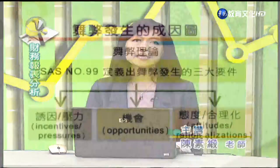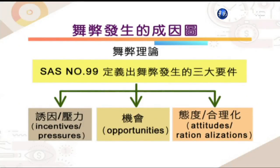根据美国审计准则委员会第99号定义，舞弊发生有三大成因：第一是诱因与压力，第二是机会，第三是态度与行为的合理化。这三个成因有点类似天时地利人和，缺一不可——如果有一个方向无法达成，舞弊就不能成事。